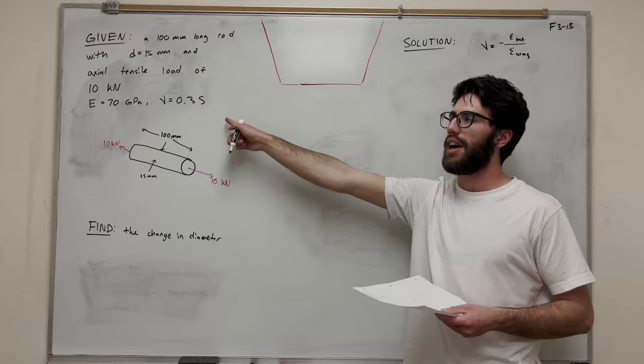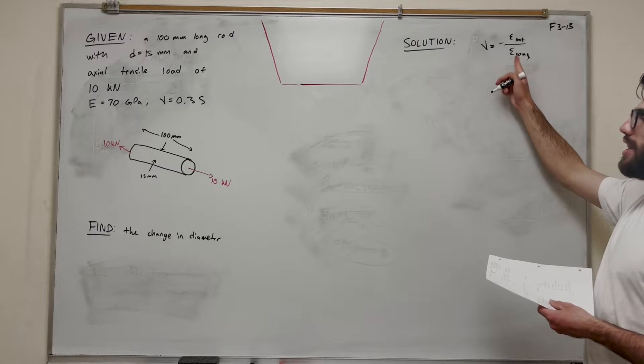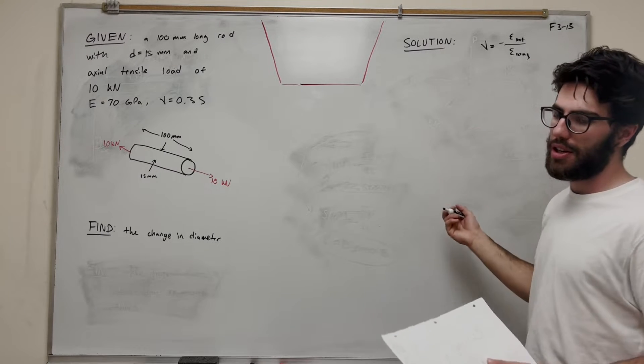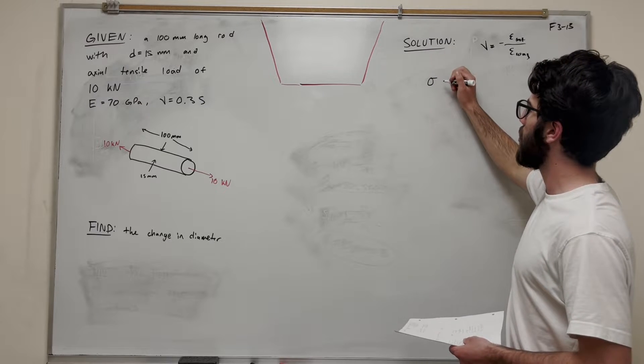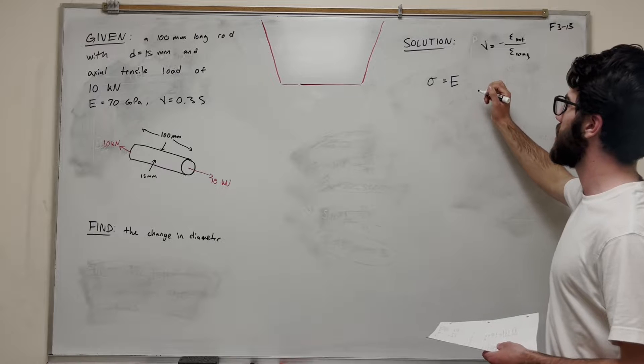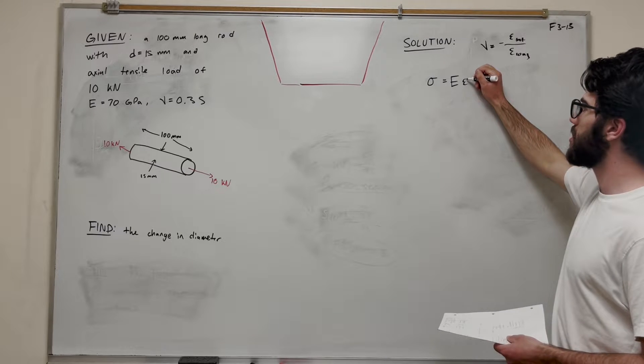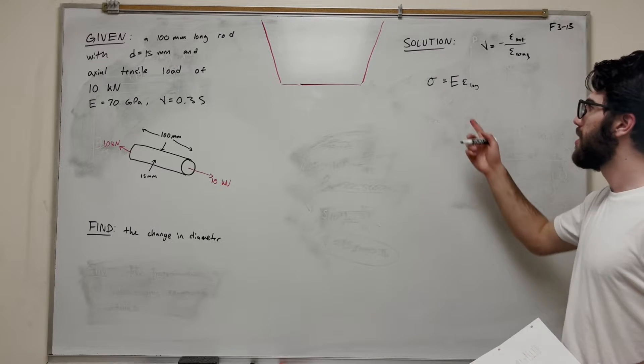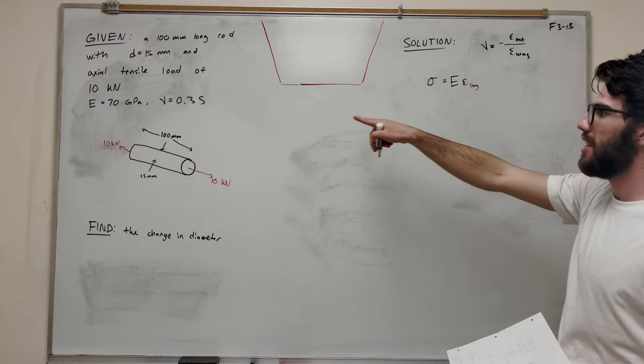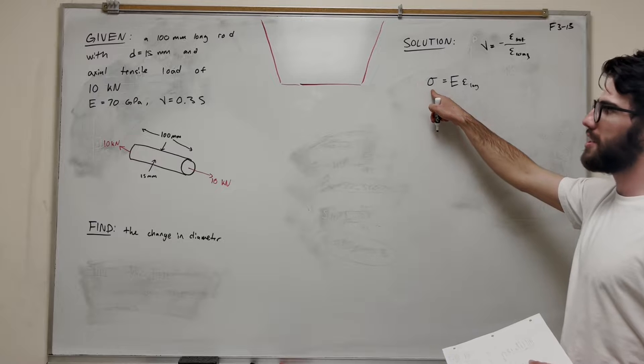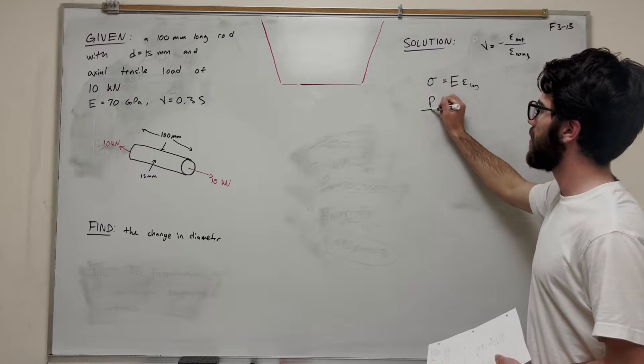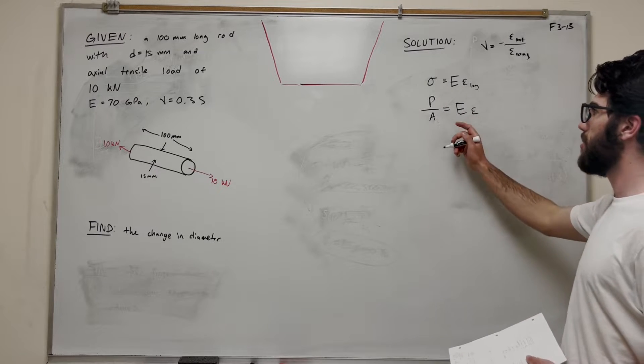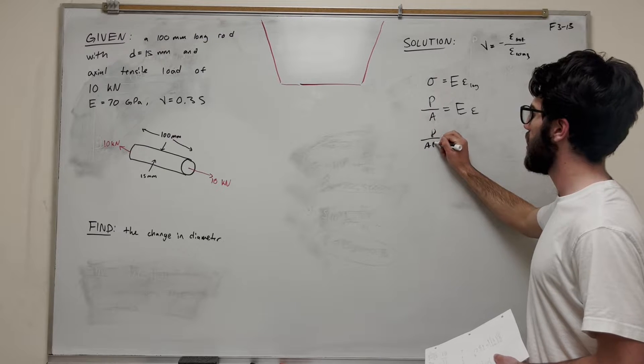We're given Poisson's ratio is 0.35. We want to find the strain in the long direction, and then we can find the strain in the lateral direction with that ratio. The equation we're using is that normal stress is equal to the modulus of elasticity times the strain. We're looking for epsilon long right now. We know that elasticity is 70 GPa, but we don't know the stress. So this can be written as force over area equals E epsilon. Dividing by E, we get P over AE equals epsilon.